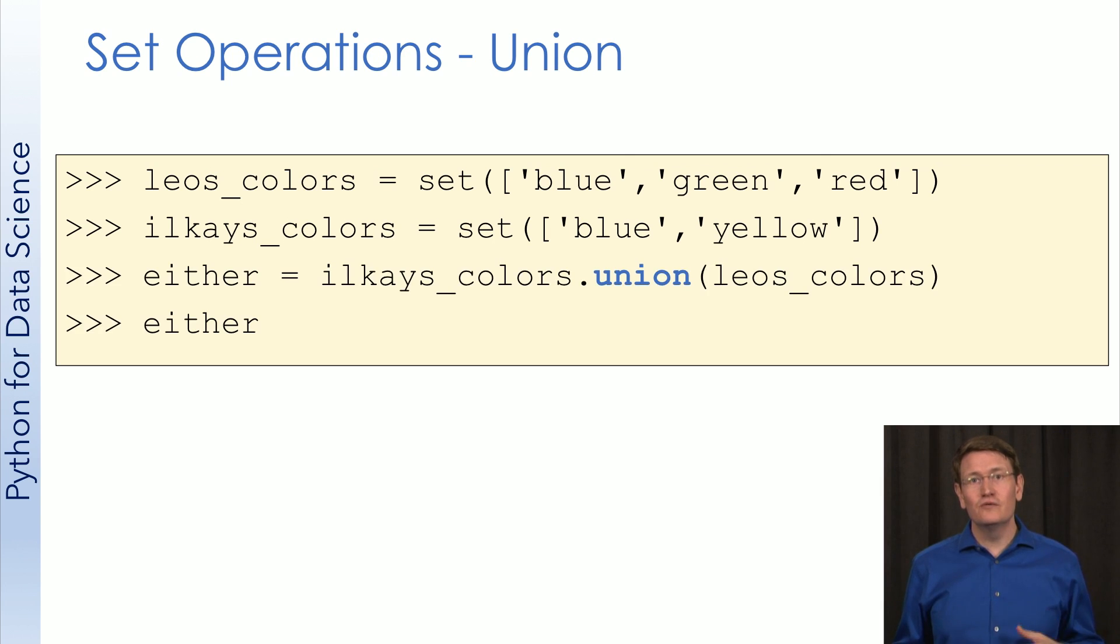First, let's see what the union does. Just like we expect, union gives us items that are in either Ilkai's set or my set of colors. This can be useful if you want to know all the unique items that are in two separate sets.